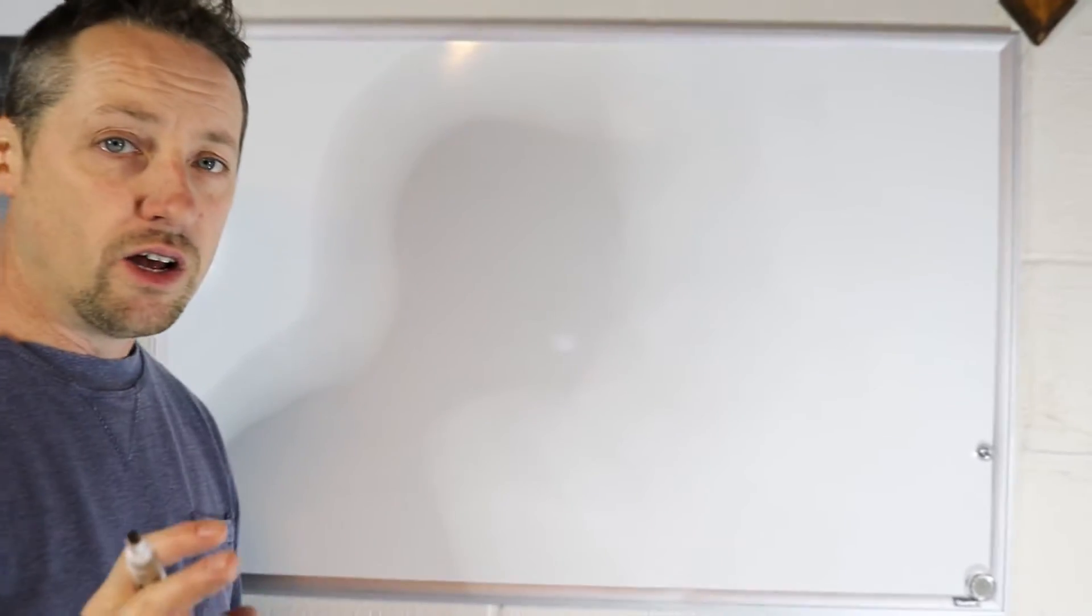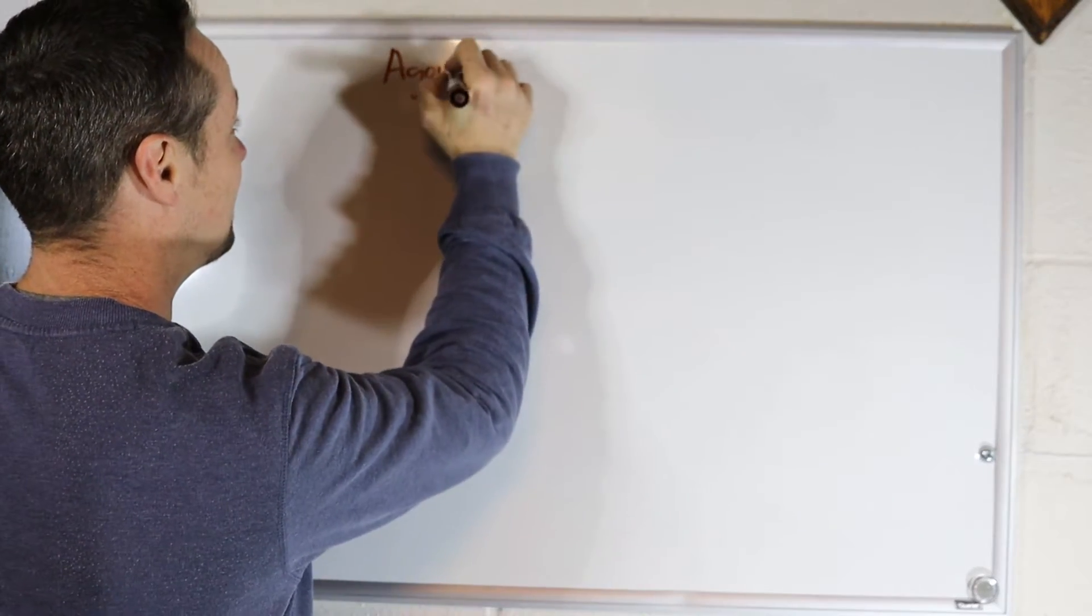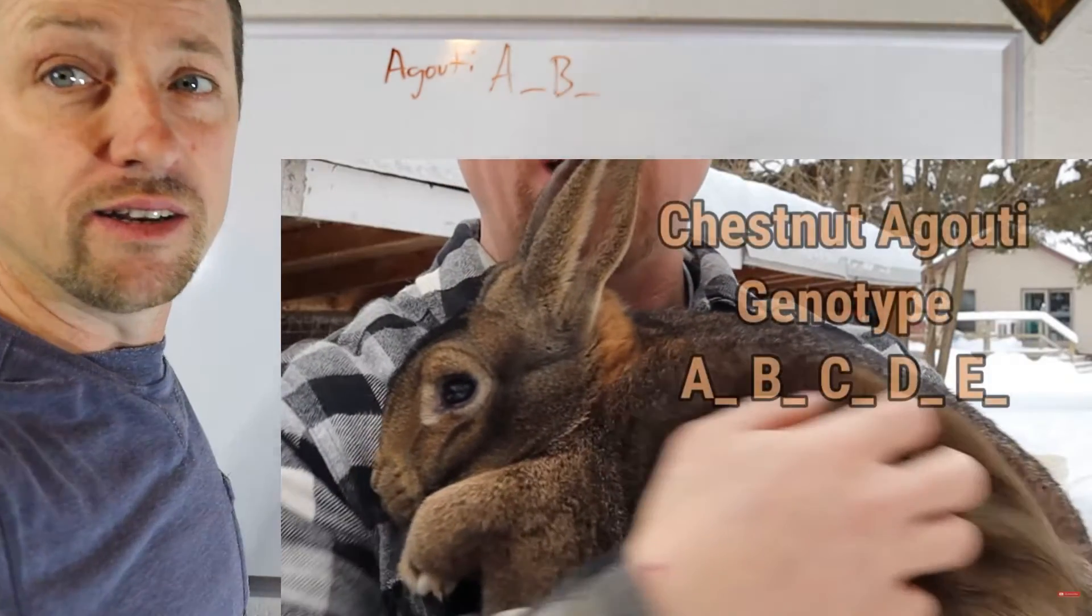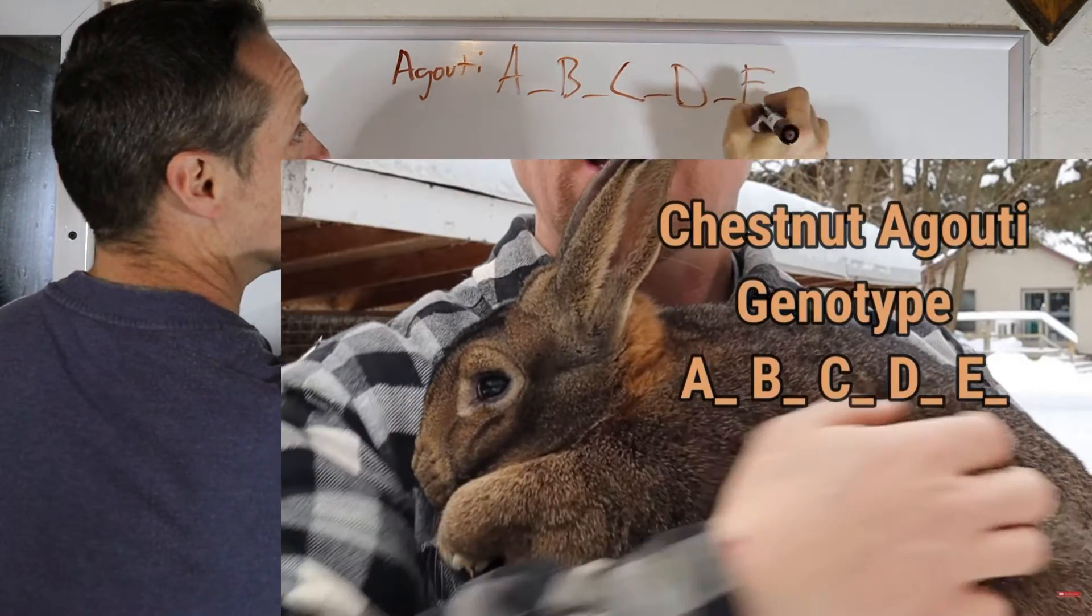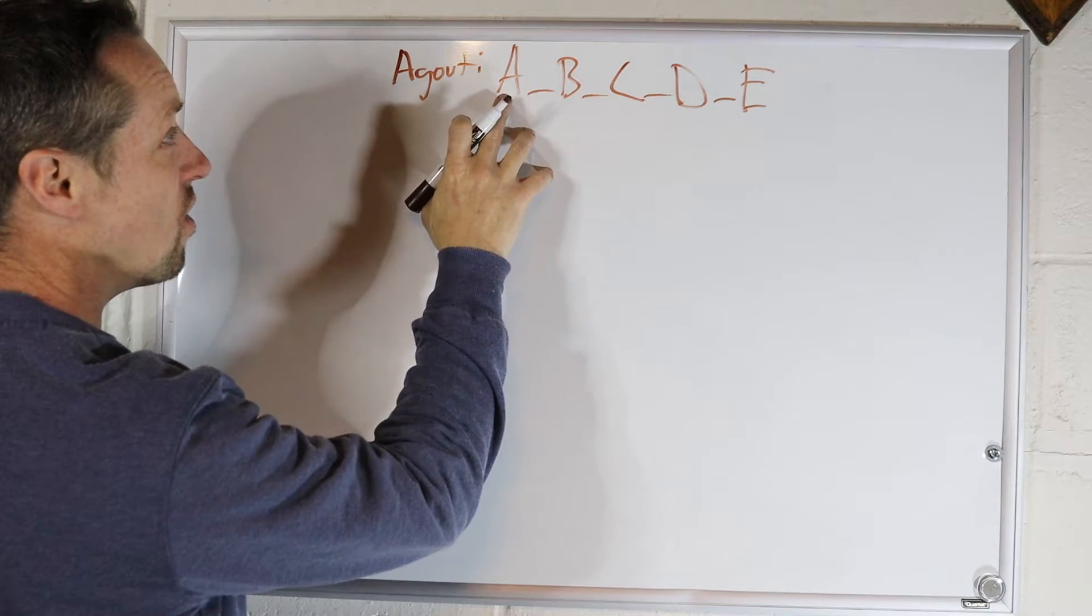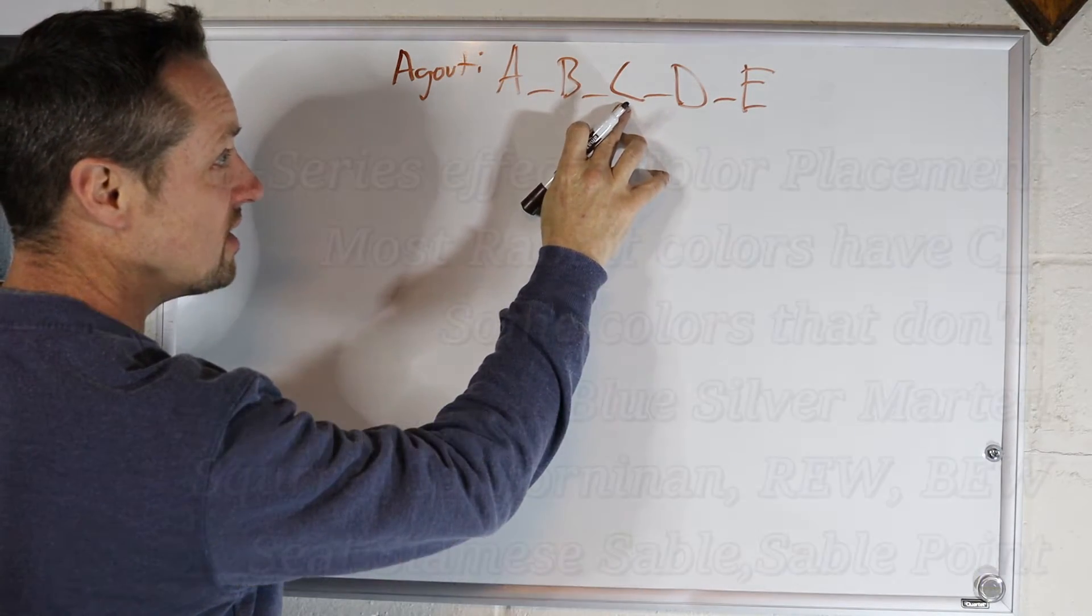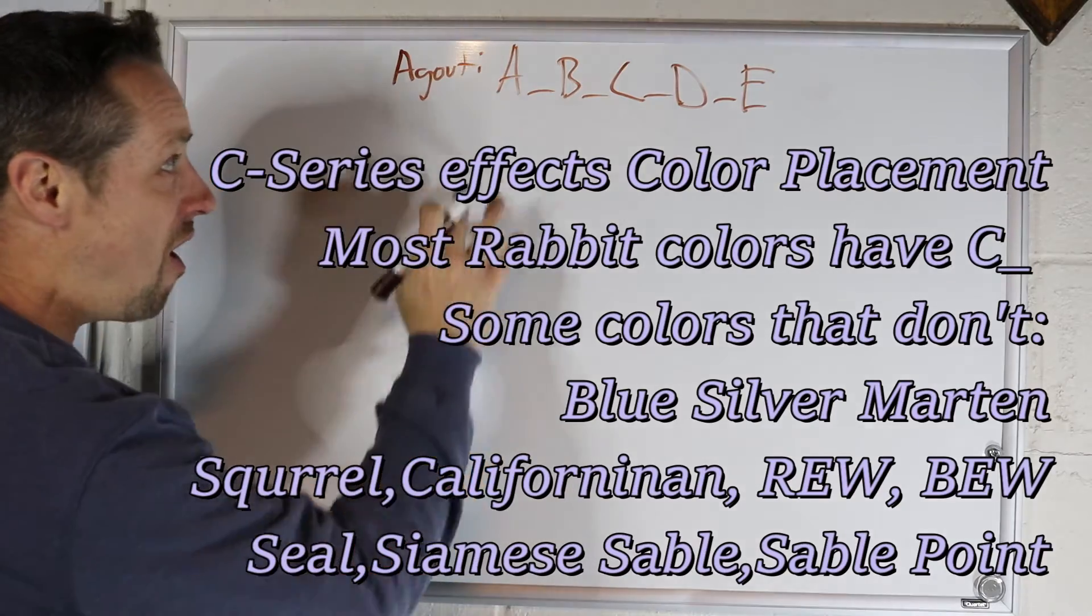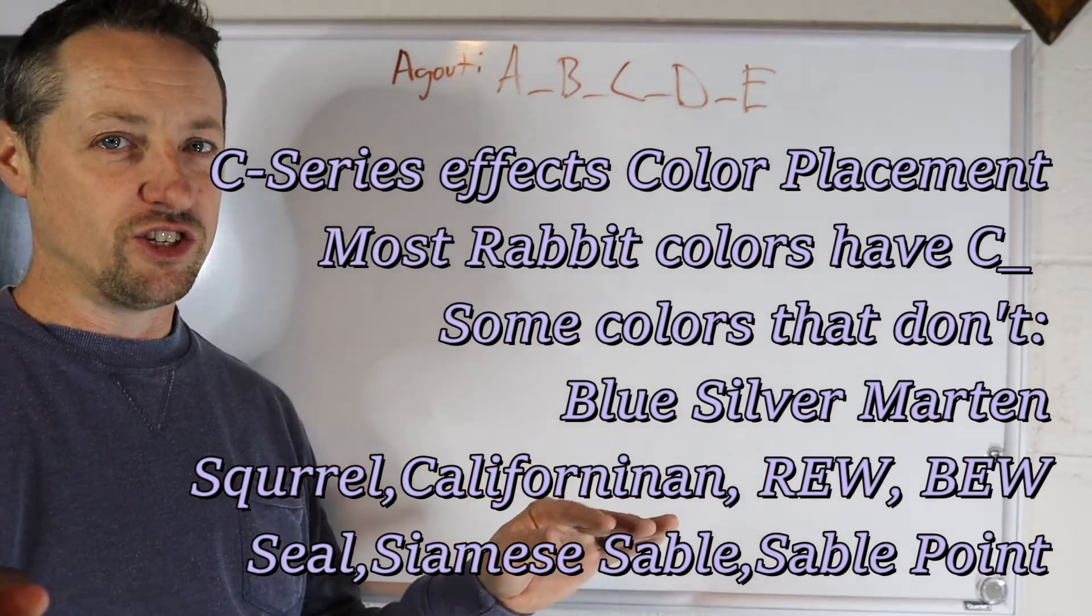So here is agouti genotype. Not agouti. A locus dominant, B locus dominant, C locus dominant, D locus dominant, E locus. So this is self or tan or agouti. This is base, this is color placement, this is dense or dilute, and this is extension. Now all these things do different things. They trigger different mutations. And that's just the gist, that's not everything. But basically, a capital letter will be dominant and a lowercase letter will be recessive.